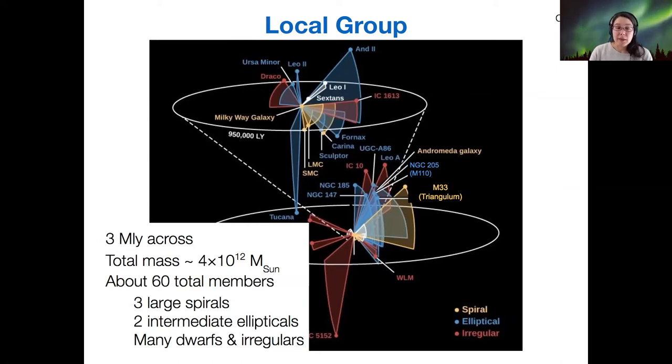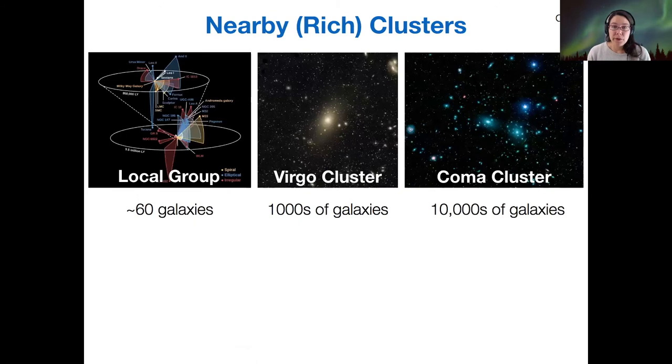I think like 50% of the mass, and the rest is distributed among the many many other members. So that's our local group—we've talked about it before, but now you've gotten to know it in a little more detail. Other clusters nearby the local group.